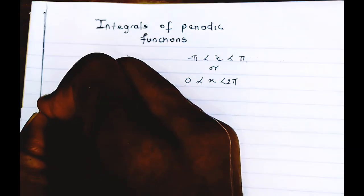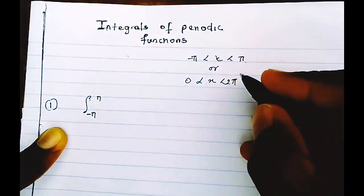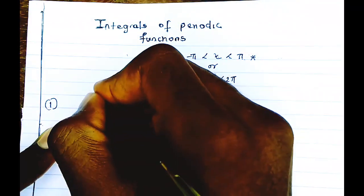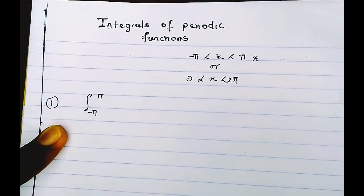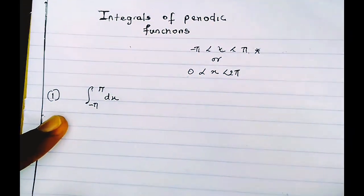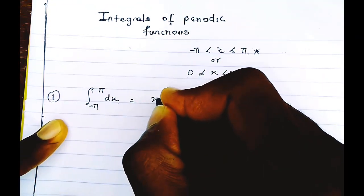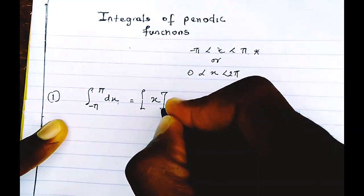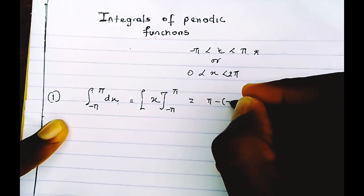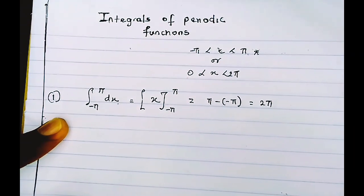Our first standard integral has limits from minus π to π of dx. Integrating dx gives us x, and applying our limits of minus π to π, we get π minus (minus π), which equals 2π. So the value of the integral of dx from minus π to π is 2π.